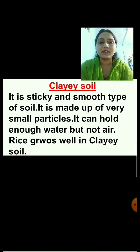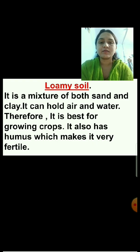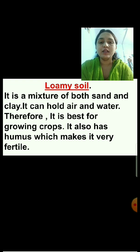The second type is clay soil. It is sticky and smooth. It is made up of very fine and small particles. It can hold enough water but not air. Rice grows well in clay soil, but only few plants can grow in it. The third type is loamy soil. It is a mixture of both sand and clay. It can hold air and water. Therefore, it is best for growing crops. It also has humus which makes it very fertile. Most plants can grow in loamy soil.